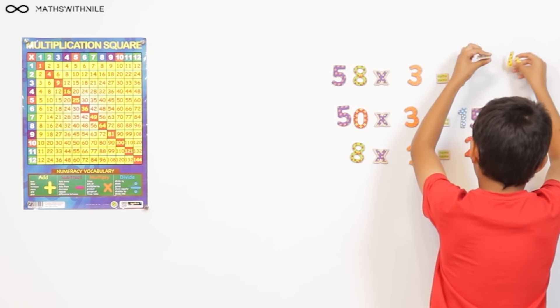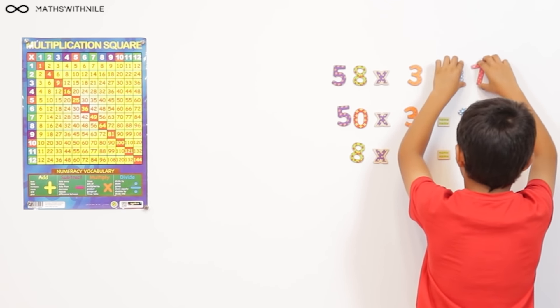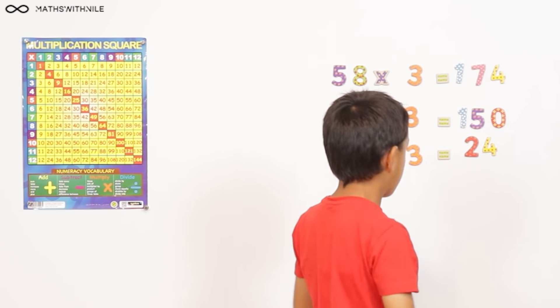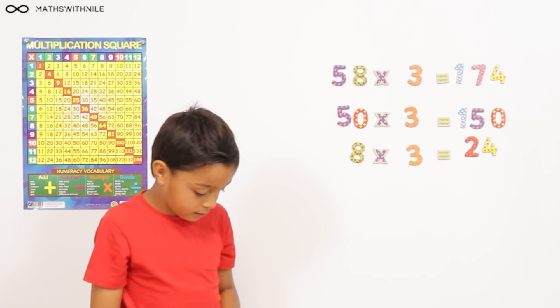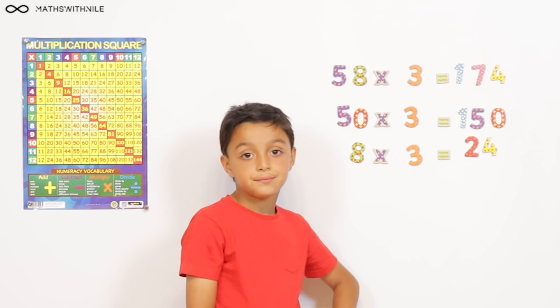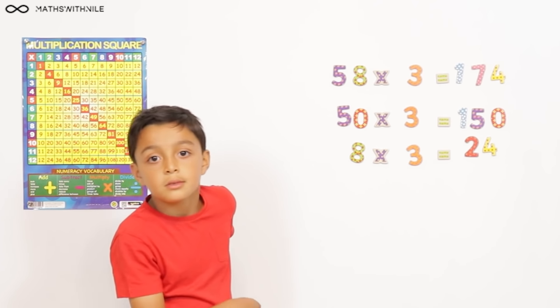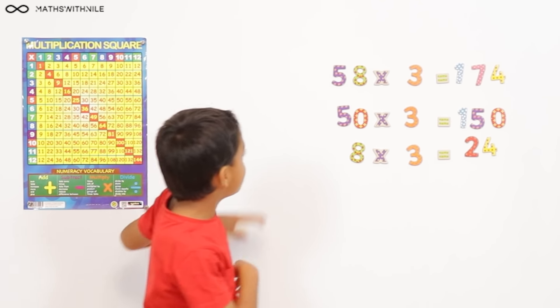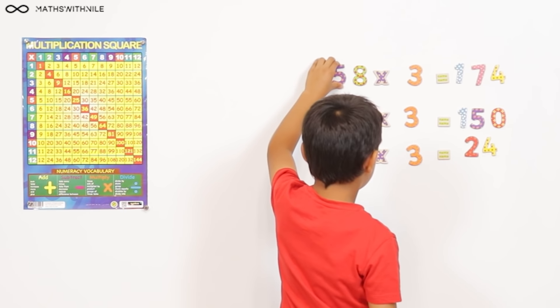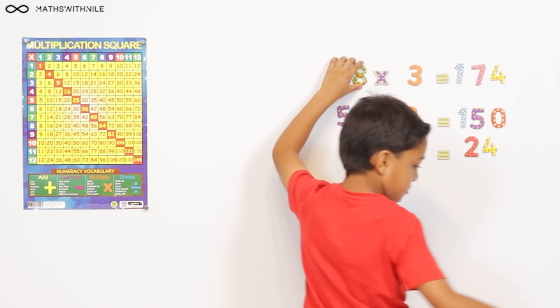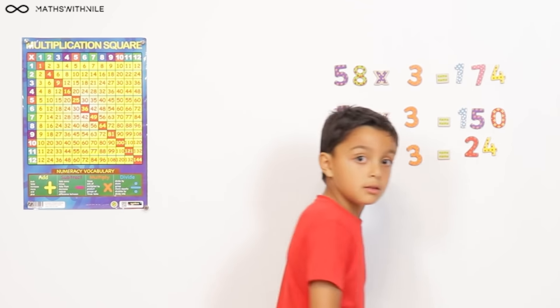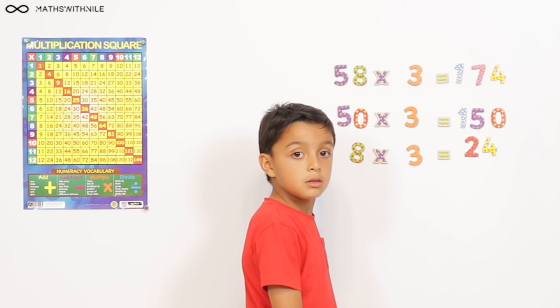So, the answer is 174. 58 times 3 equals 174. Very good. Niall, can we finish with a tricky question? Okay. Can you do 92? Listen to the question first. 92 times 60.